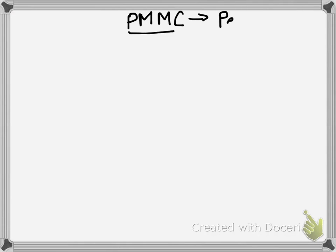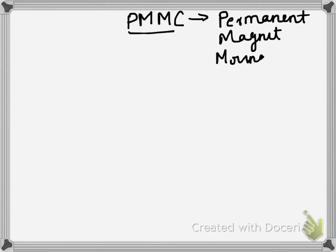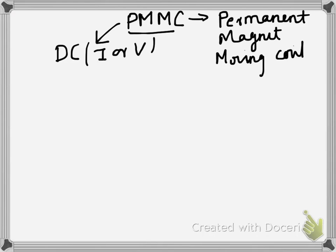Good evening everyone. Today we are going to talk about a very interesting topic which is PMMC. It stands for Permanent Magnet Moving Coil type instrument. This particular instrument is used to measure the value of DC current or voltages. It is an important instrument because it is among some of the instruments which have the capability to measure only DC.